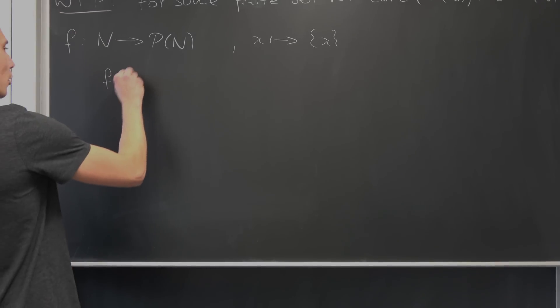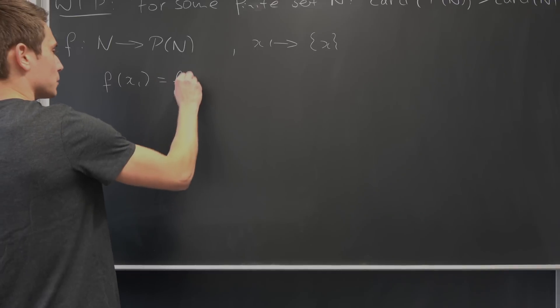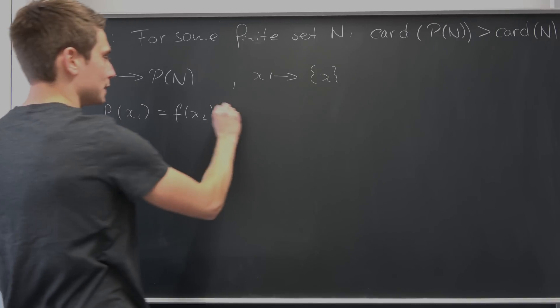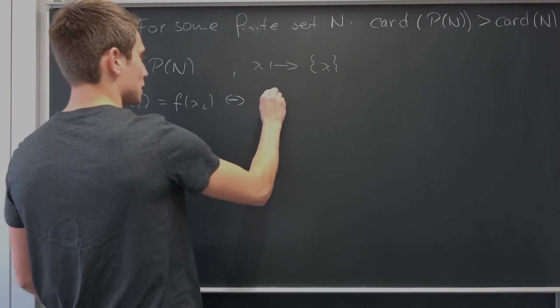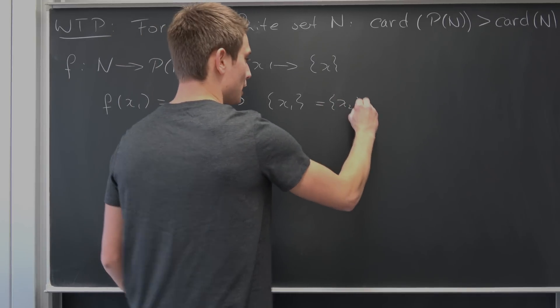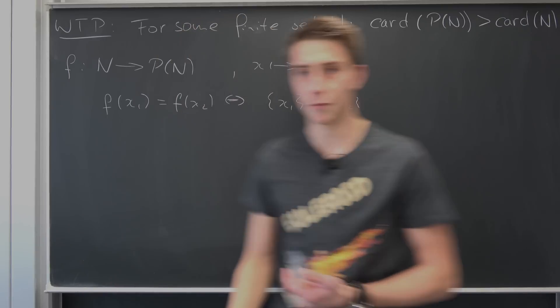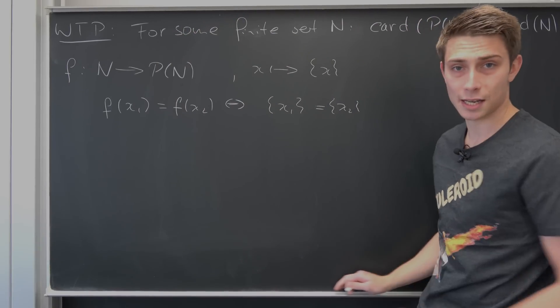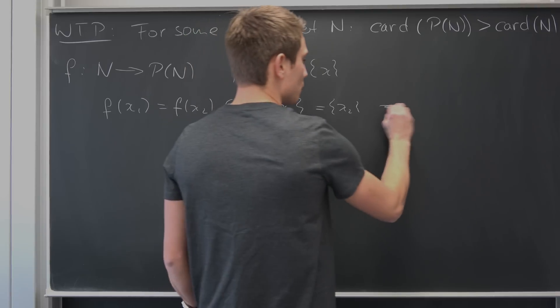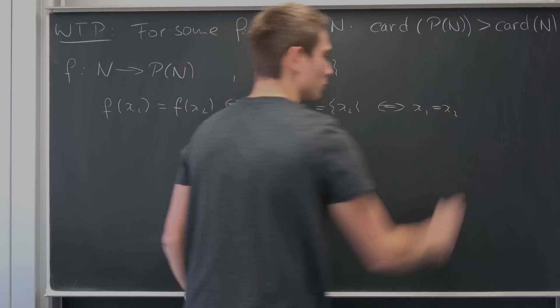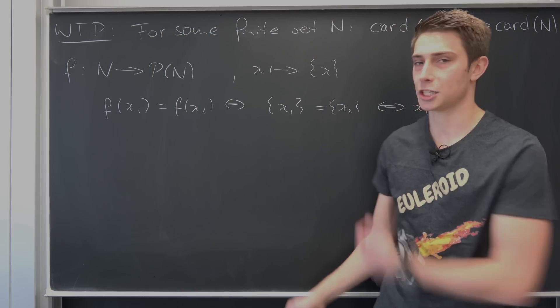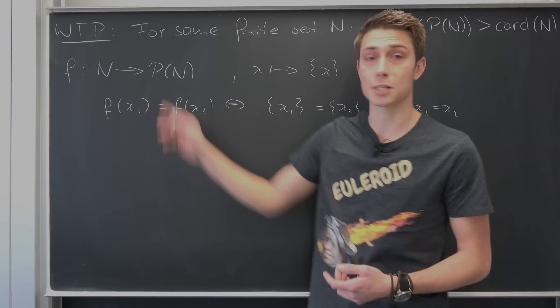If we take f of x1 and we set it equal to f of x2, well by this mapping we know that this is the set which has x1 in it being equal to the set which has x2 in it. If you take a look at my set theory video, two sets are exactly equal if the entries are equal. So we can say that x1 is definitely equal to x2. So there's already an injection between those two sets.